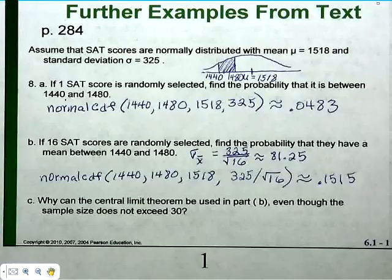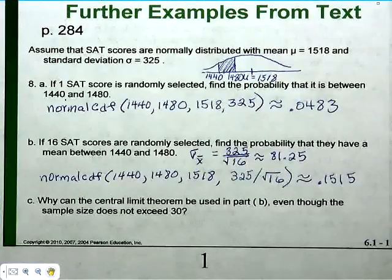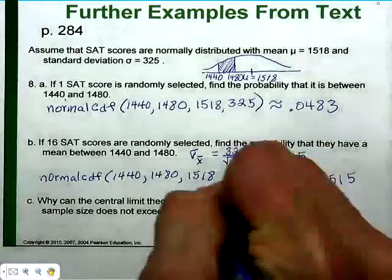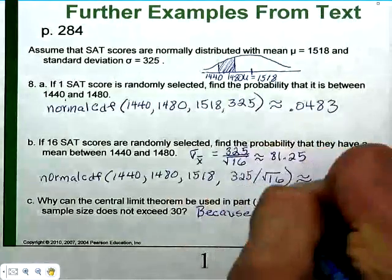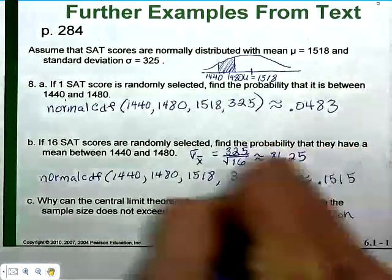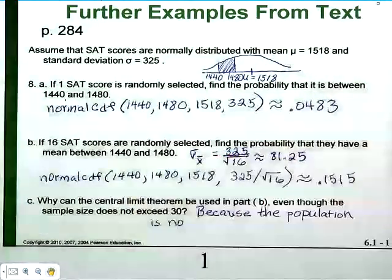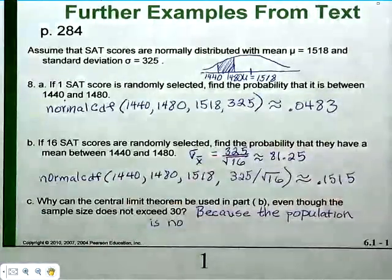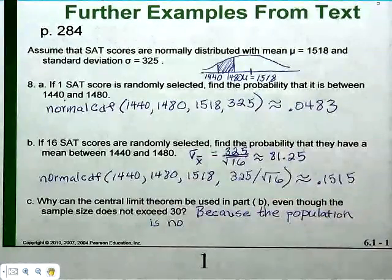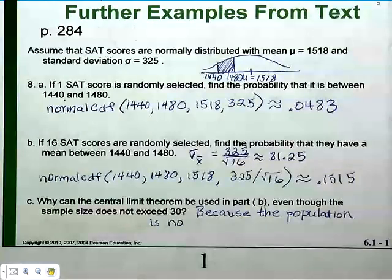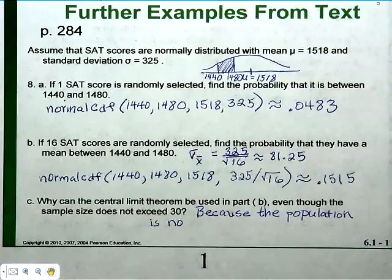If the sample size is greater than 30, it doesn't matter whether your population is normally distributed or not. But if sample size is less than 30 and the population is not normally distributed, you have to say the central limit theorem doesn't apply. You need to know either that the population is normally distributed, or that the sample size is greater than 30 — then it doesn't matter whether the population is normally distributed.